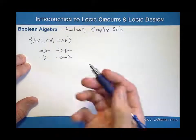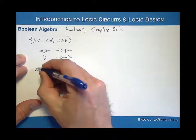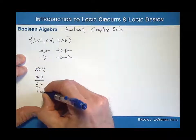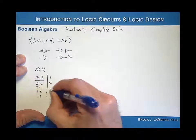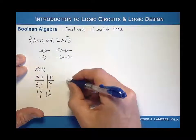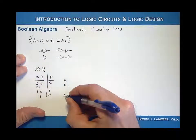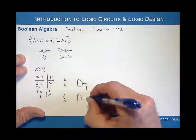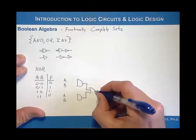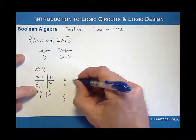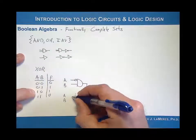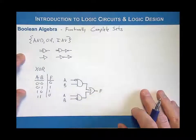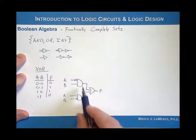And you can do this for everything. You can do it for a buffer — you just take two inverters and put them together. You want a NOR gate, you can do that. And you can even do exclusive OR gates. If you wanted an exclusive OR gate, the truth table with inputs A and B has output 0, 1, 1, 0. You can implement that with a logic expression: A-NOT AND B, OR A AND B-NOT. This is the logic expression for an exclusive OR gate using nothing but AND gates, OR gates, and inverters.